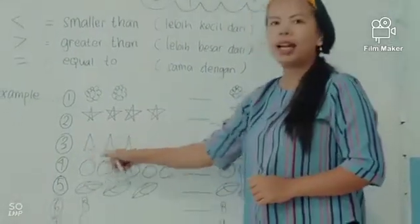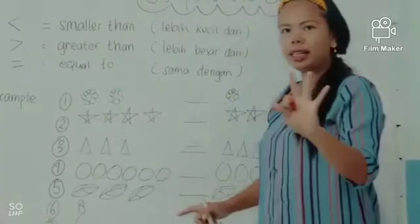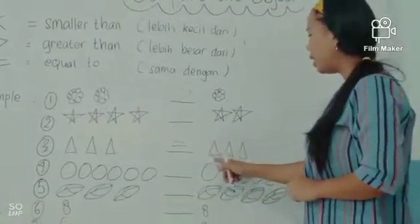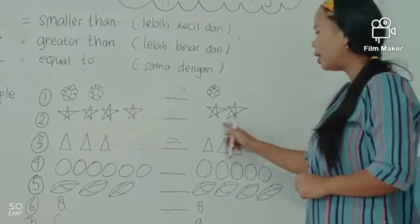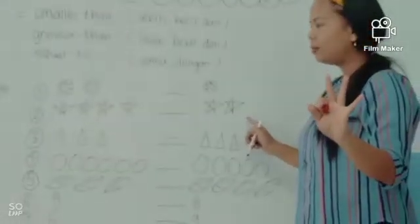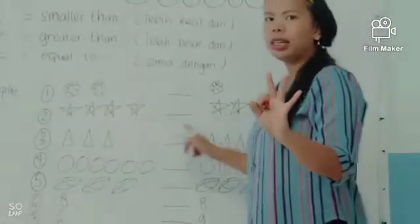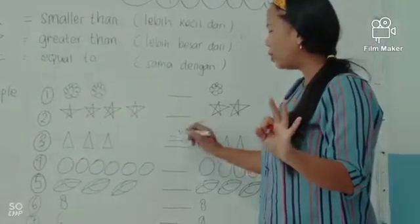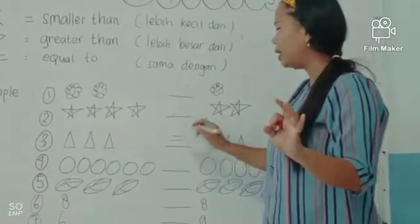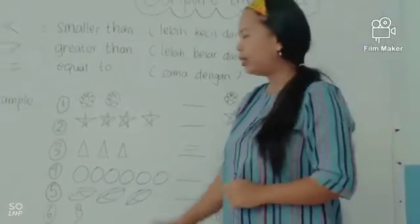Segitiga yang ada di sebelah kiri ada tiga, dan segitiga yang ada di sebelah kanan ada tiga. Mereka sama-sama tiga, jadi kita buat symbolnya sama dengan. Okay, number four.